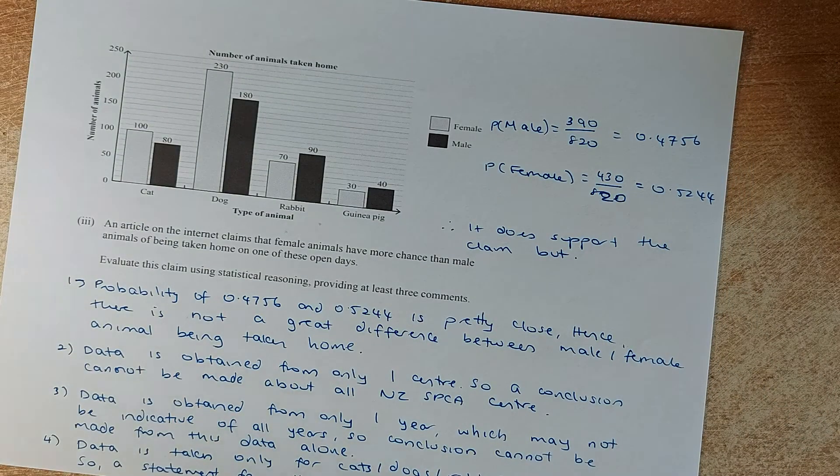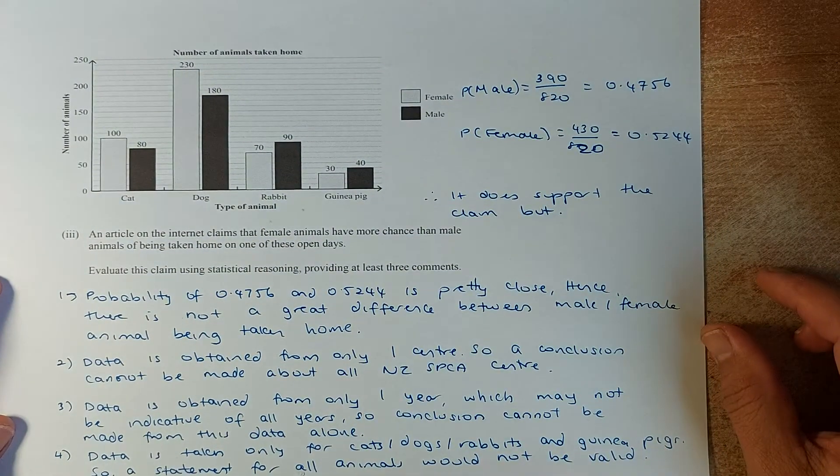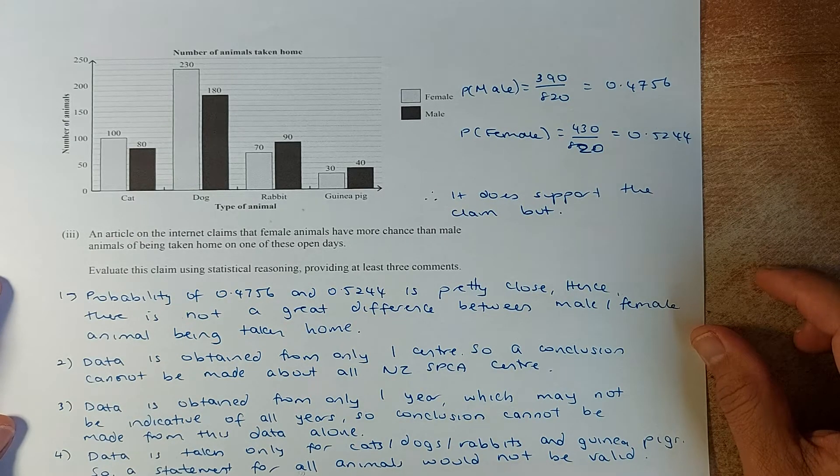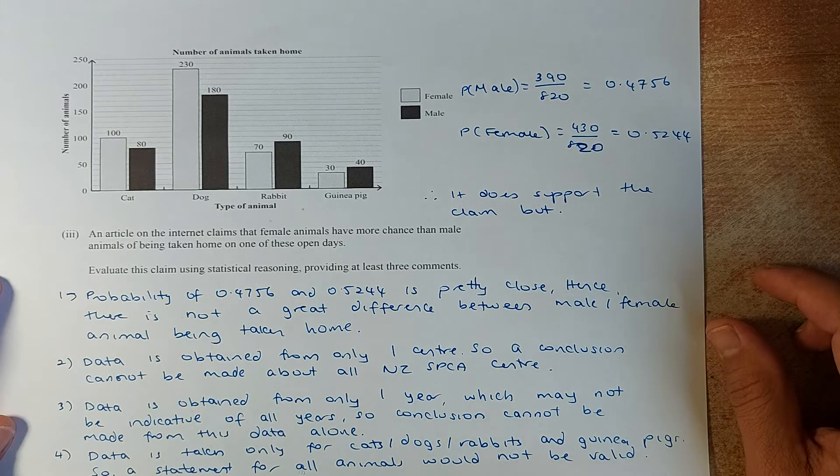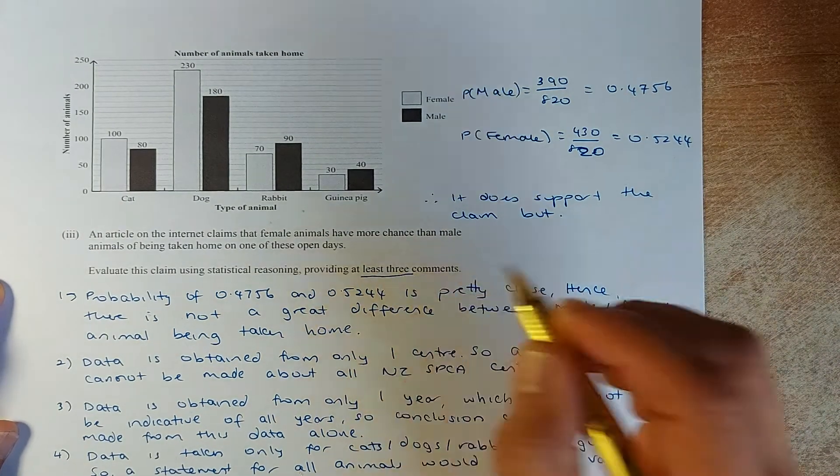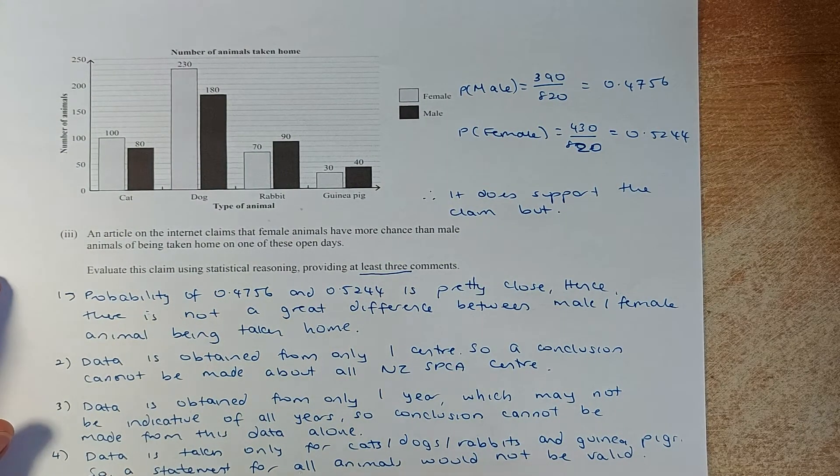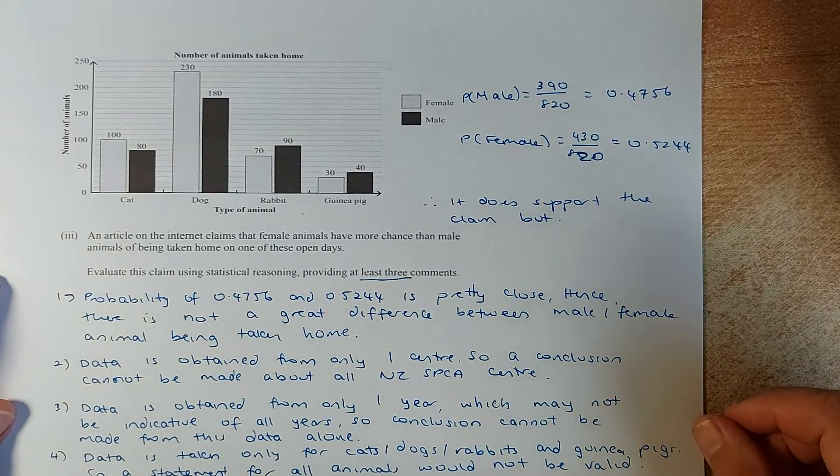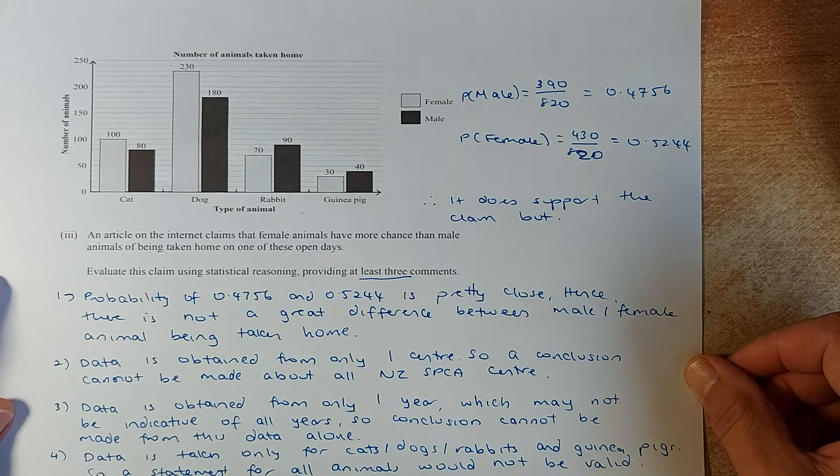The last question is the excellence question. An article on the internet claims that female animals have more chance than males of being taken home on one of these open days. Evaluate this claim using statistical reasoning and provide at least 3 comments. This is important. Provide at least 3 comments. If you give only 1 comment, you will get an achieve. 2 valid comments is a merit. 3 or more, then you will get an excellence. So I'm going to give you 4 comments, so you choose which one you prefer and put it down in your external.